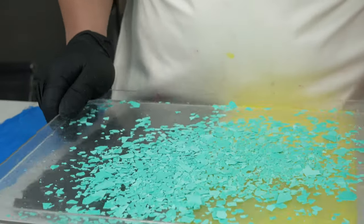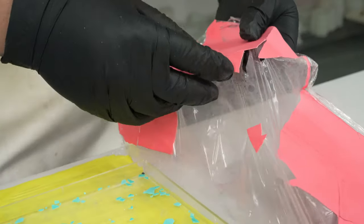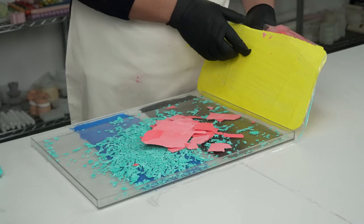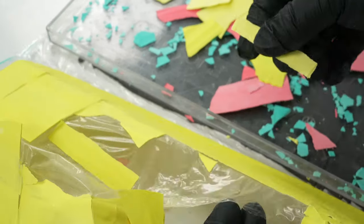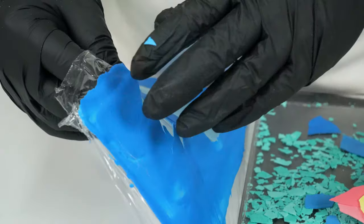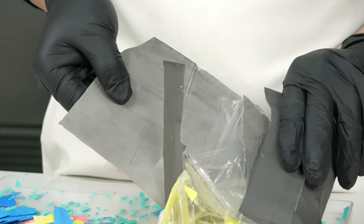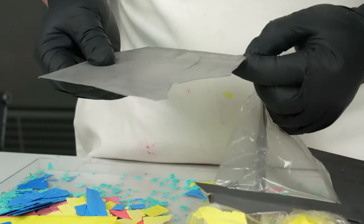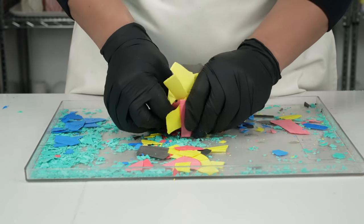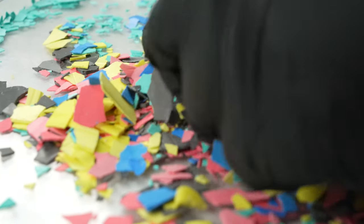You can then break the terrazzo into smaller pieces and use them for a variety of projects. One creative idea is to mix different colors of terrazzo fragments to create unique and colorful designs. You can also use the fragments to create mosaic patterns or embed them into other materials like wood or concrete. Remember, the key to success in this step is to handle the solidified terrazzo with care and patience. With a little creativity and experimentation, you can create beautiful and unique pieces.